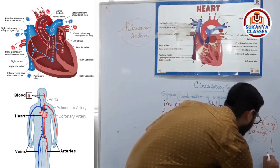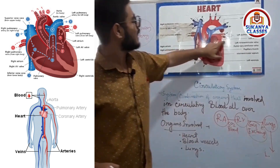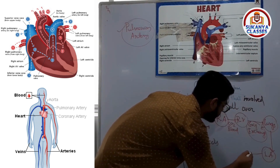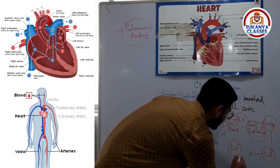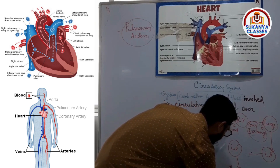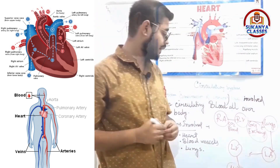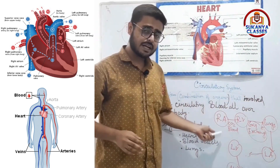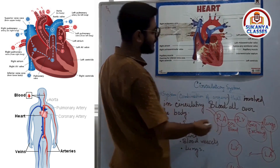After gas exchange in the lungs, the CO2-rich blood is converted to oxygenated blood. The lungs then send this oxygenated blood to the left atrium. From the left atrium, blood goes to the left ventricle, and from the left ventricle it is pumped to the whole body. This is the basic mechanism of blood circulation.